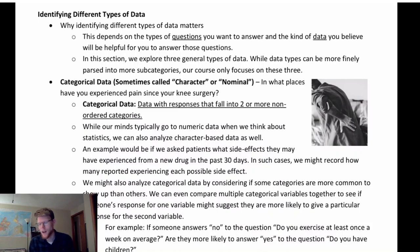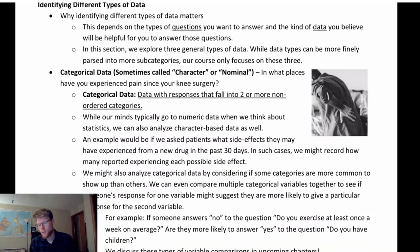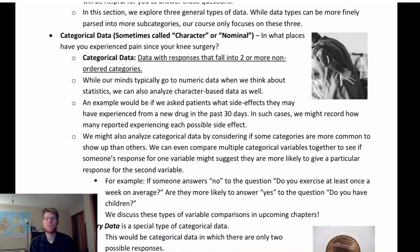An example of categorical data would be: 'In what places have you experienced pain since your knee surgery?' That's going to elicit responses like different parts of the body, which are non-ordered — not like a scale from strongly agree to strongly disagree. There are things we can do statistically with categorical data even if it's not numeric, including options for visualizing and analyzing it.